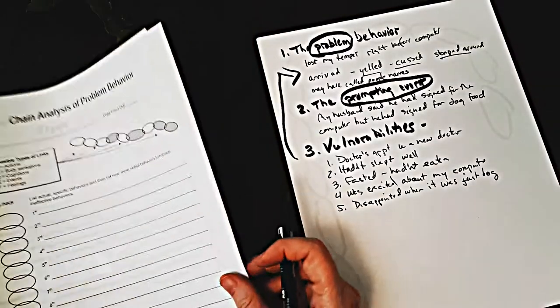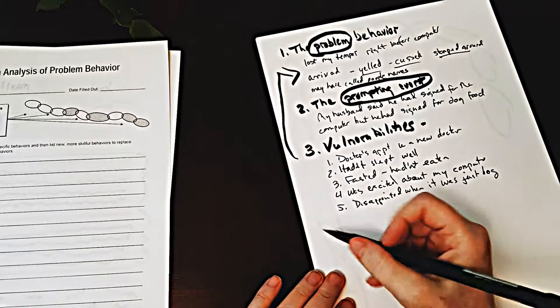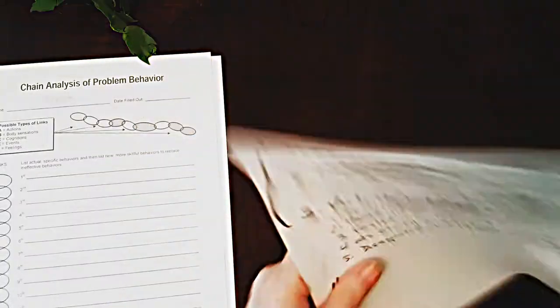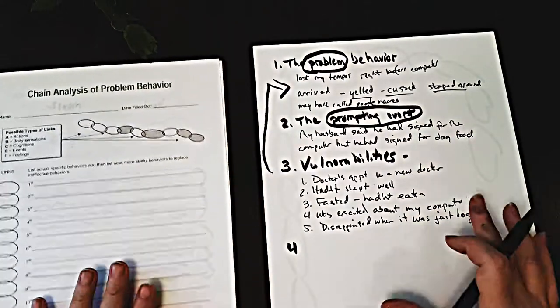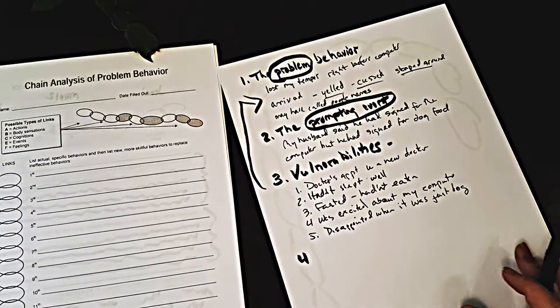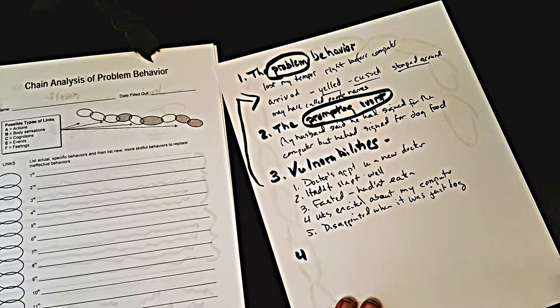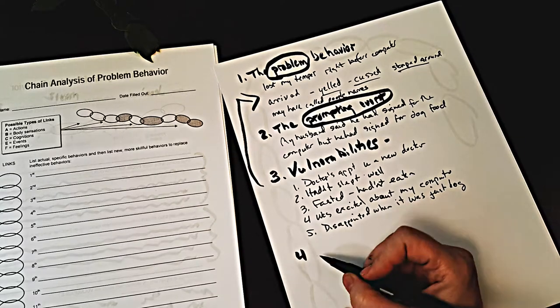The fourth thing you're going to look at are the links in the chain. I've turned to the second page, which has all the links. You can find this by Googling 'behavioral chain analysis' — it comes right up as a PDF. If you don't have a printer, you can do what I've done here. The links in the chain are all the thoughts, feelings, body sensations, events, beliefs, expectations, emotions, and the things you and others did.